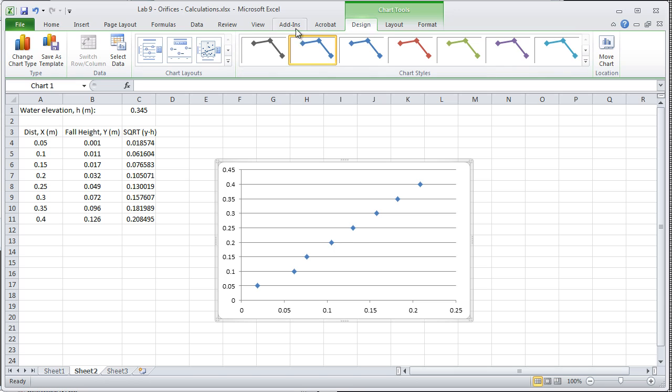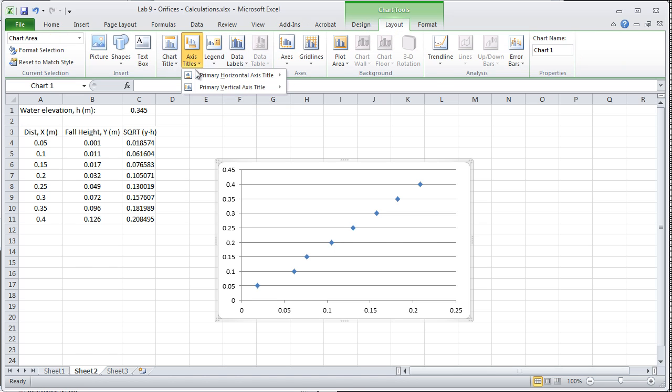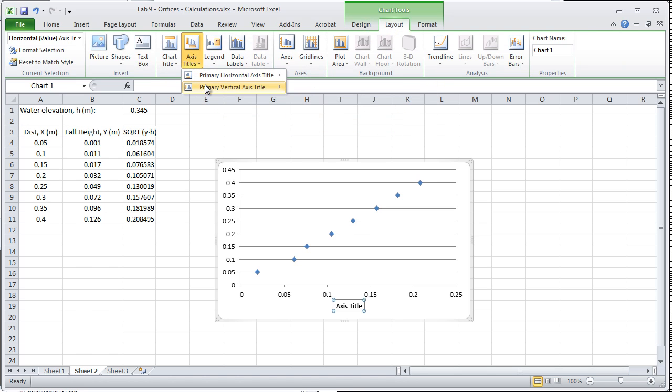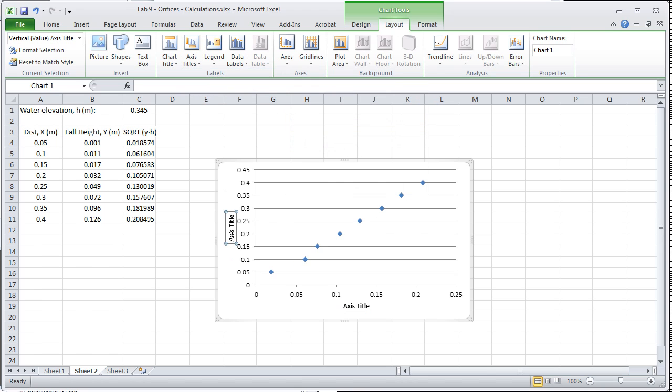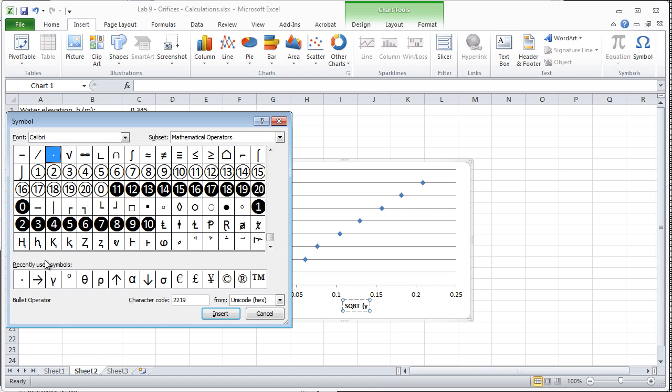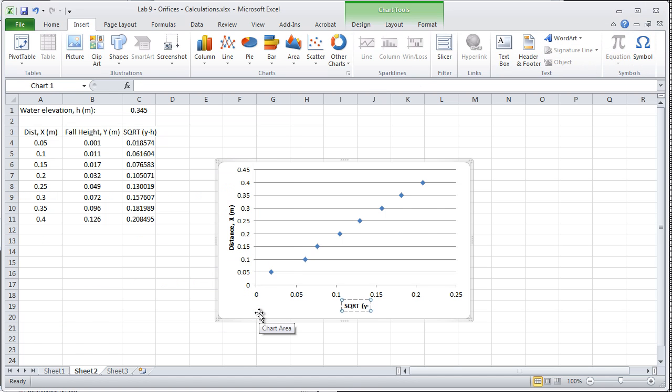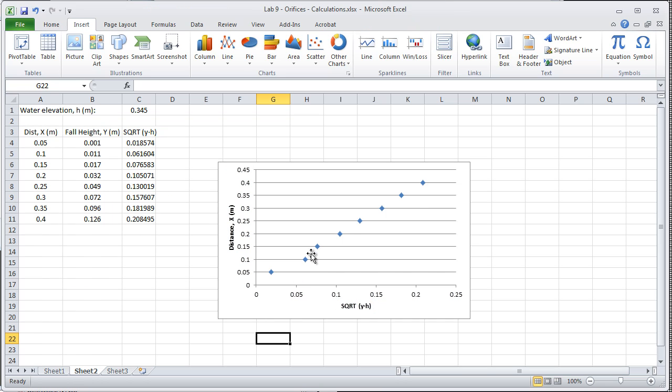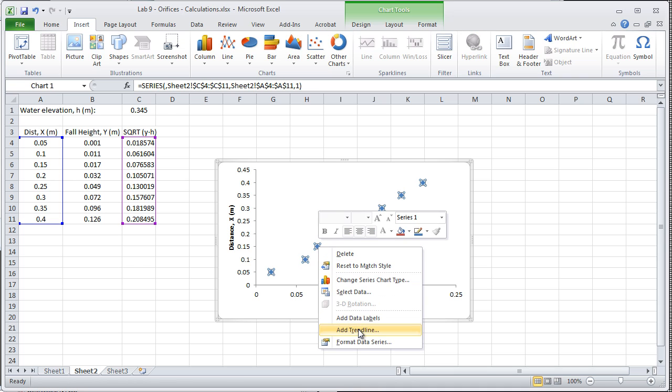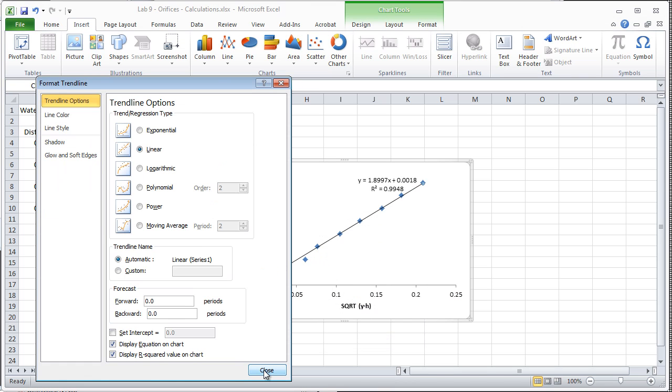We'll insert these axis titles just to make sure that we don't lose track of what it is. Okay, so here is the distance x, in terms of meters. Down here is the square root of Y times H. Now when I insert a best fit line, right click, add trend line, I'm going to display the equation and the R squared value.